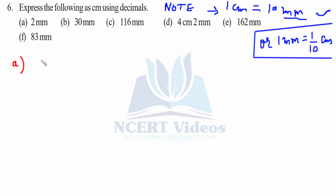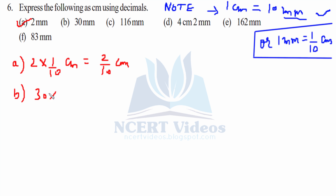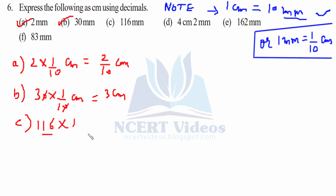Part A: 2 mm. Two times one over ten equals two over ten, which is 0.2 centimeters. Part B: 30 mm. Thirty times one over ten — the zeros cancel — giving you 3 centimeters. Part C: 116 mm. 116 divided by 10 gives you 11.6 centimeters.